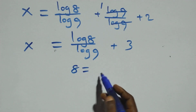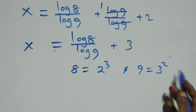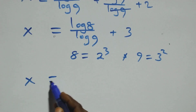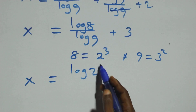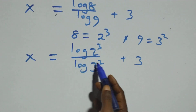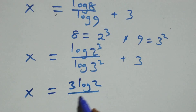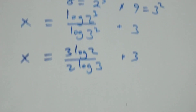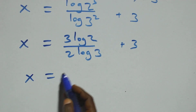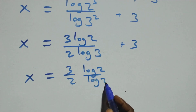We express 8 as 2 times 2 times 2, that's 2 cubed, and 9 as 3 times 3, that's 3 squared. So x equals log(2 cubed) over log(3 squared) plus 3. Applying the power rule of logarithms, this can be written as x equals 3 over 2 times log 2 over log 3, plus 3.